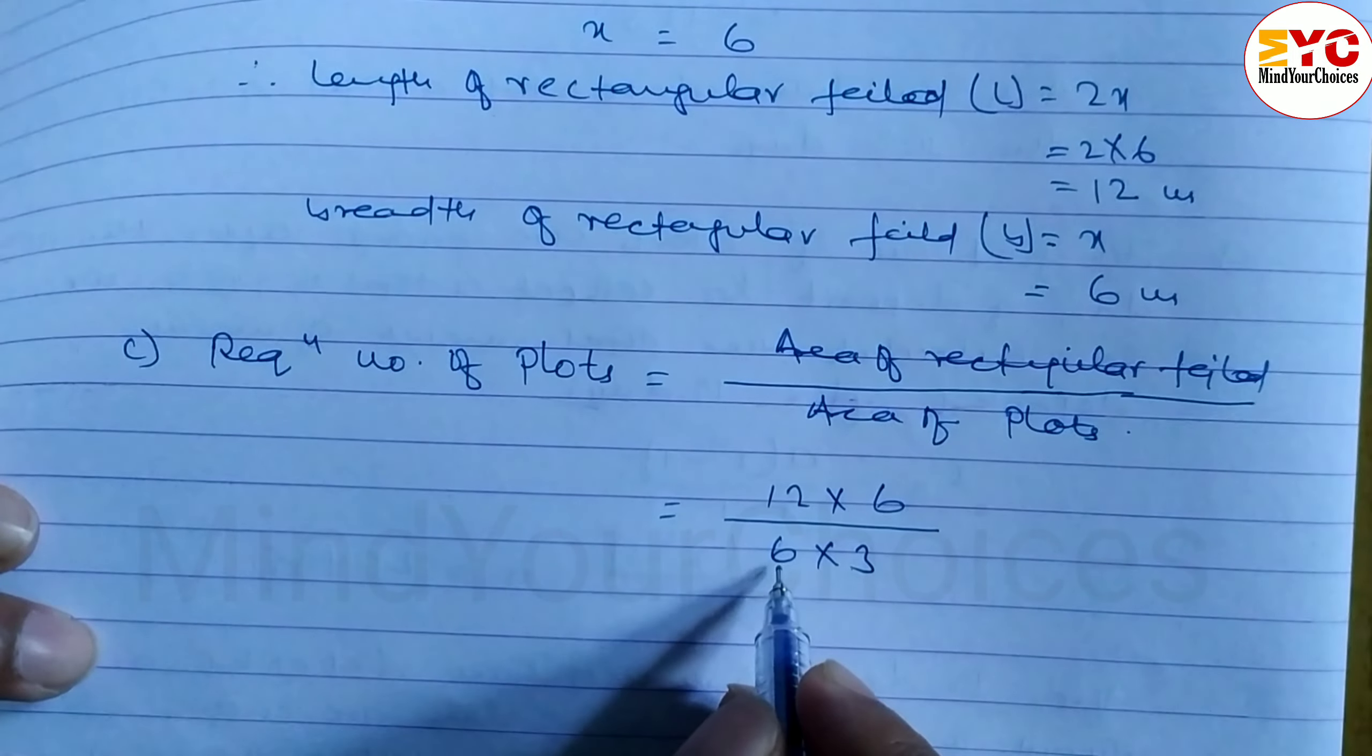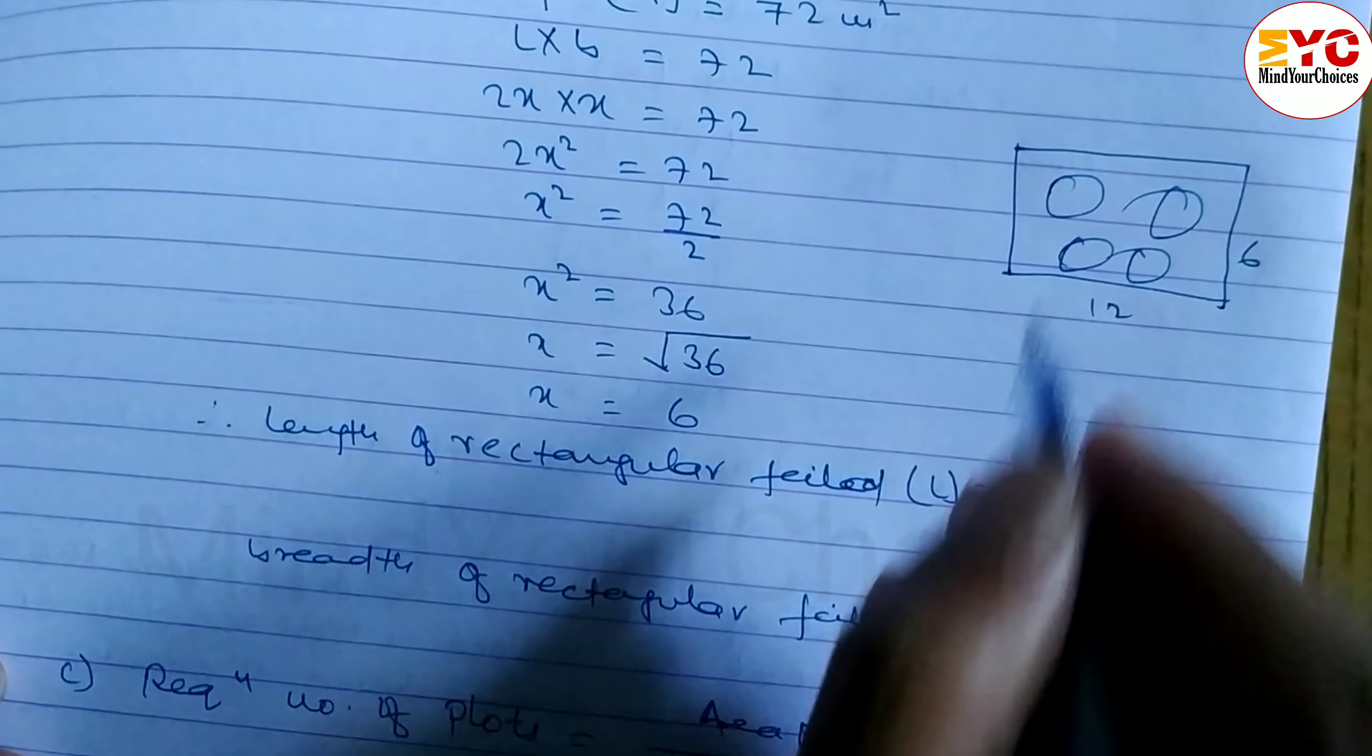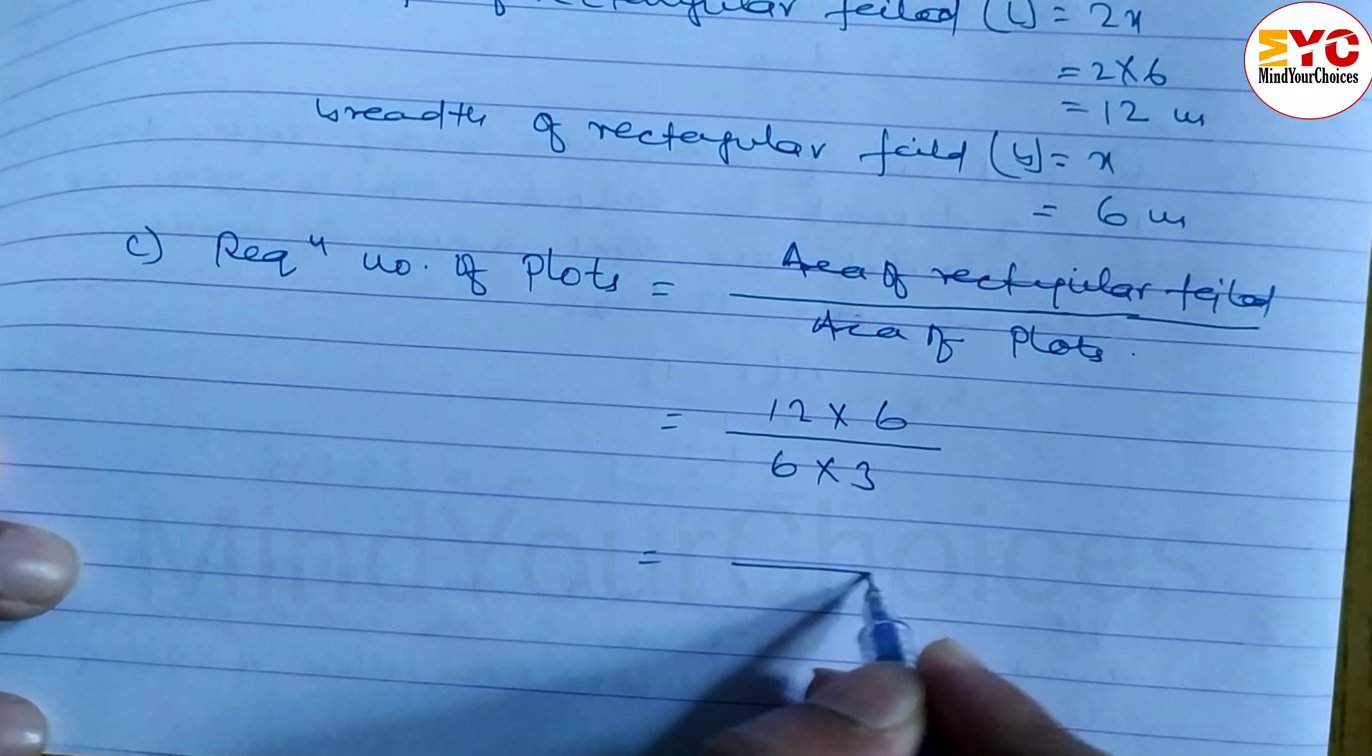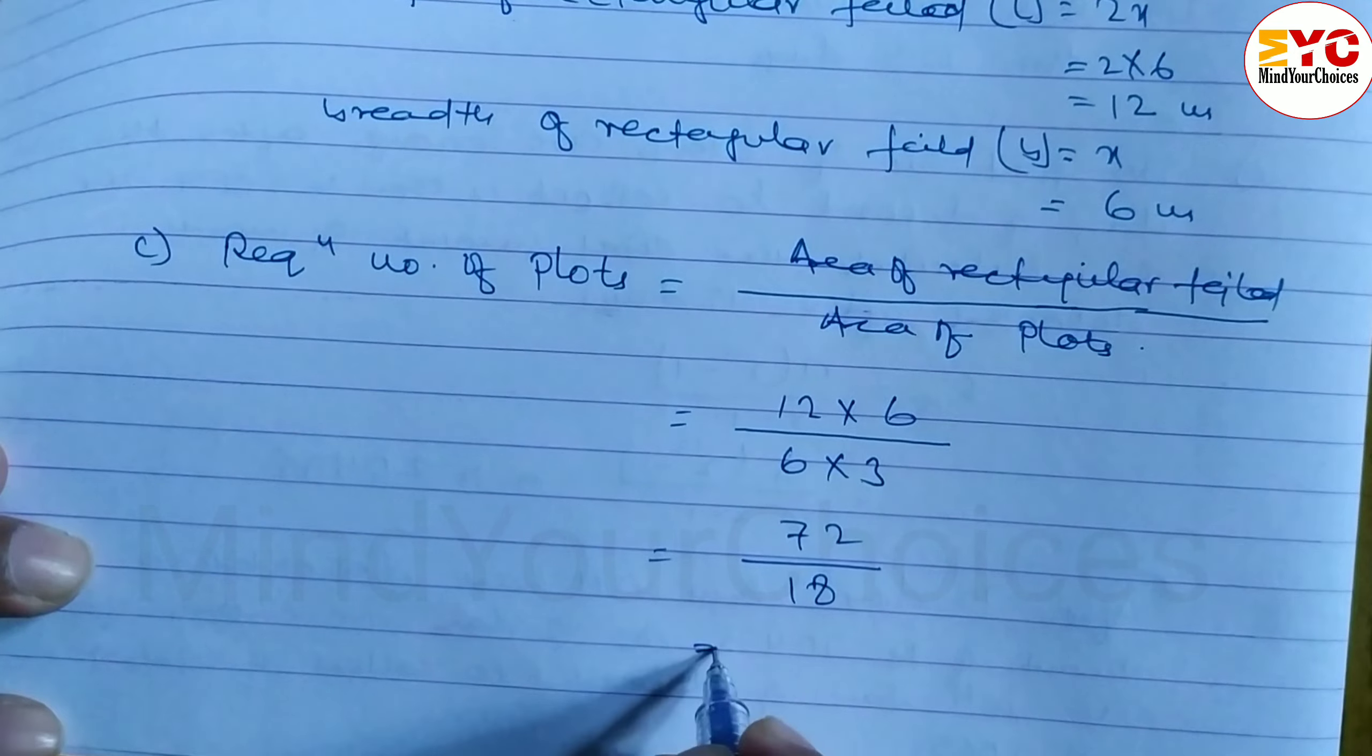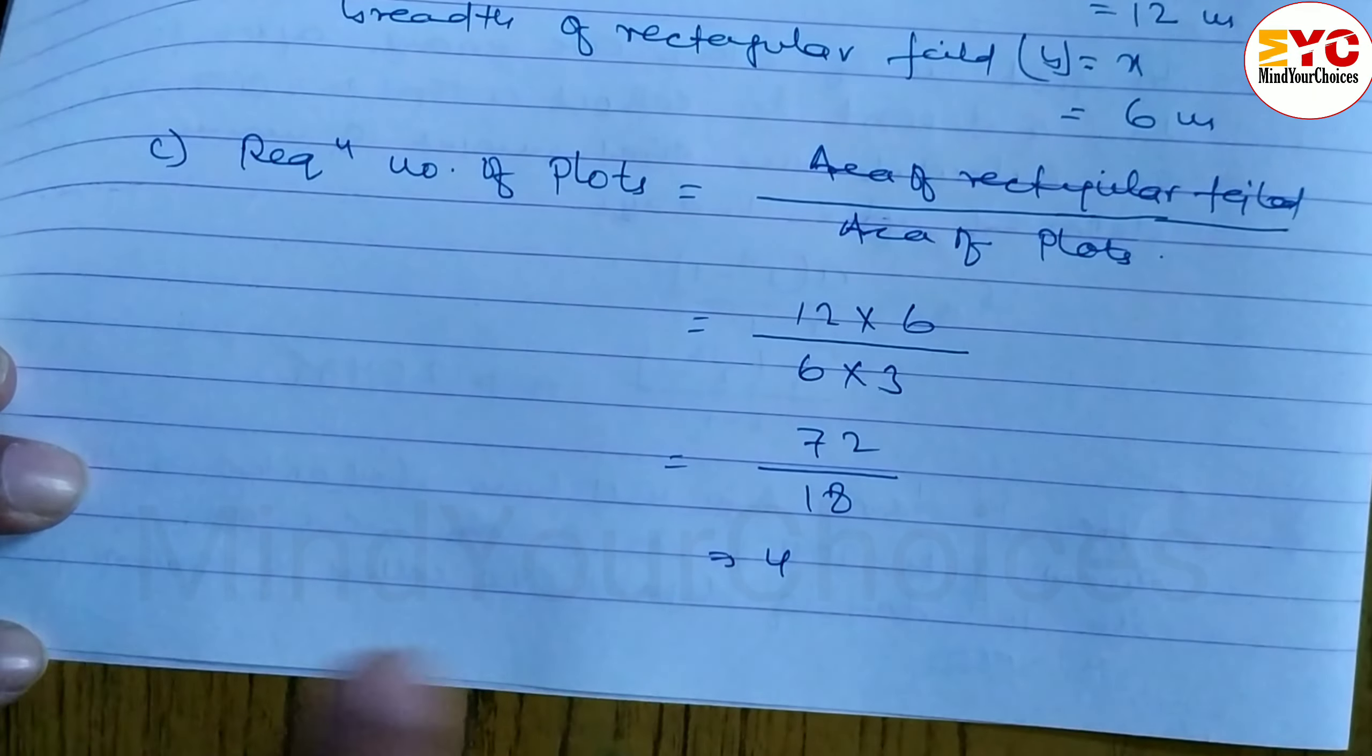So just calculate: 12 times 6 gives you 72, divide by 3 times 6 which is 18, you get 4. So 4 plots can be made to fill the rectangular field.